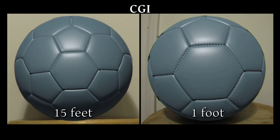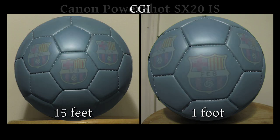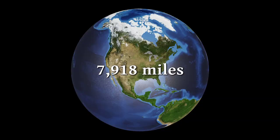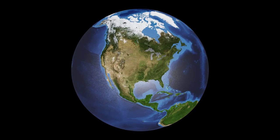In other words, the facing topography will look bigger the closer the camera is to a ball — like, say, the globe.